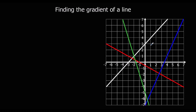So let's start with this white line. Every 1 we go across, we go up 1 — so the gradient is 1. Blue line: every 1 I go across, I go up 2. So the gradient of the blue line is 2.